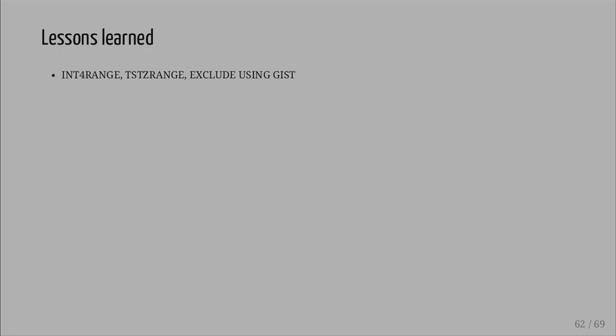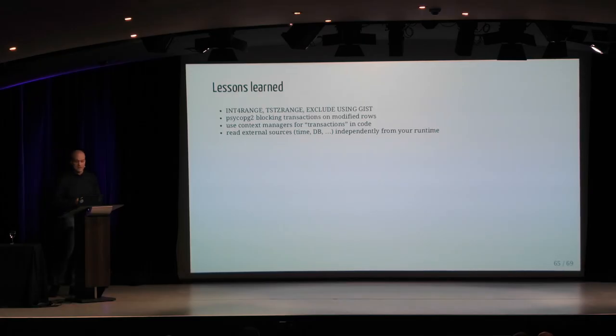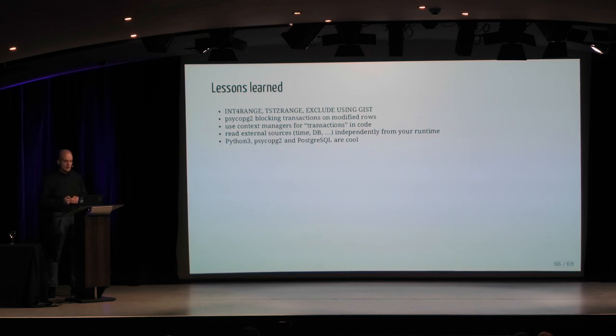So what are the lessons learned? Ranges and constraints using the generalized search tree, reading external sources like time and database independently from your runtime, and Python and Postgres are cool of course. You can certainly imagine how you could extend such basic database tables with revisions, or on the other hand, imagine what would happen if into your two dimensions of time you would add the time zones.